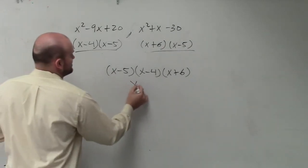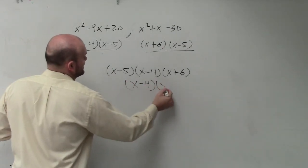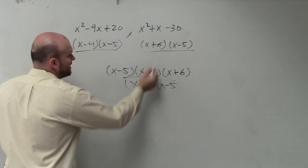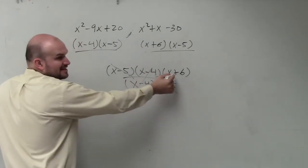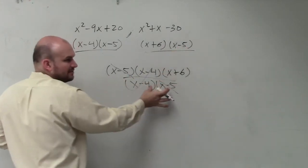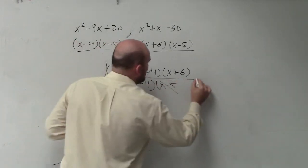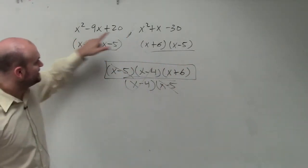Because just think about it. If I did like x minus 4 over x minus 5, the division of that would just give you an answer of x plus 6. And I could do the same thing with that.